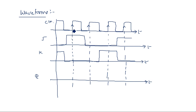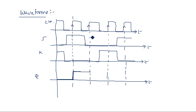Assume the previous output is zero. At the first rising edge of the clock signal, the state is J equal to 1 and K equal to 0 — so output is equal to 1. This 1 will be continued until the next rising edge of the clock occurs, irrespective of any changes in J and K. Until the next rising edge occurs, the state is continuous.